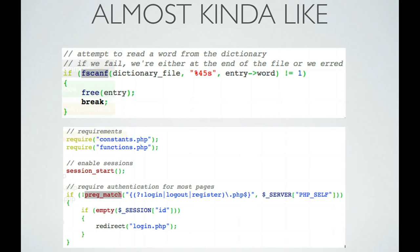We've done some things in CS50 that are a little bit like regular expressions. For example, in the dictionary.c file for the spellcheck problem set, you may have used fscanf to read in a word from the dictionary. The "%45s" is looking for a string of 45 characters — somewhat like a rudimentary regular expression. And in the most recent web programming problem set, in the distro code for PHP, we actually have a simple regular expression that checks if the web page passed in matches either login, logout, or register.php, returning true or false based on that match.